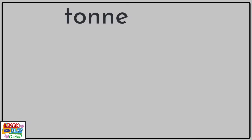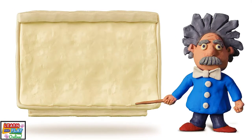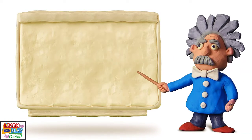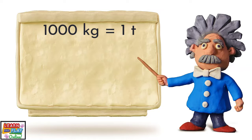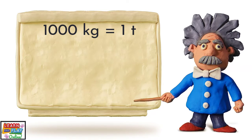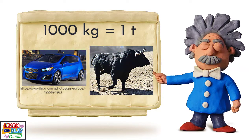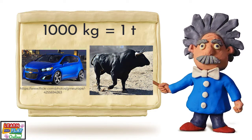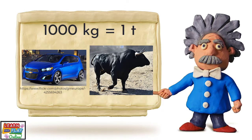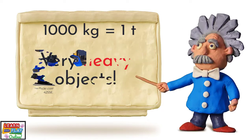Now we have come to the last formal unit of mass, which is a ton. The abbreviated form for a ton is the letter T on its own. When you have 1000 kilograms, that means you have 1 ton. To relate it to real-life examples, a small car or an average-sized bull weigh around a ton each. So when referring to things that weigh a ton or more, you are talking about very heavy objects.